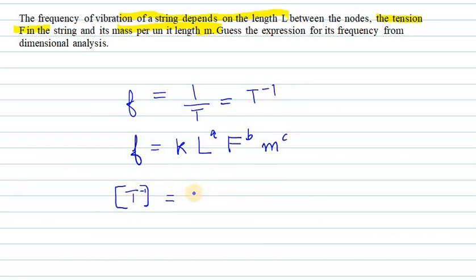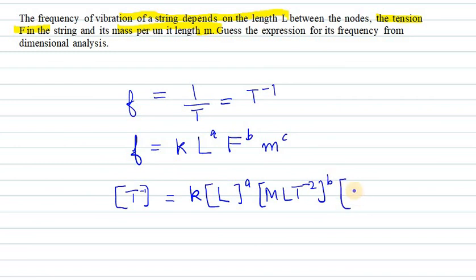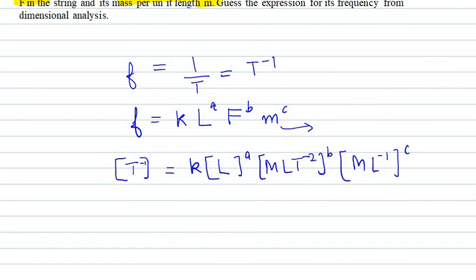The value for frequency is T raised to power minus 1 on the left-hand side, and K is a constant. The dimension for L is L raised to power A. The dimension for force is M L raised to power 1 T raised to power minus 2, all raised to power B. For C, mass per unit length gives M L raised to power minus 1, raised to power C. We have three constants A, B, and C to find, and T raised to power minus 1 with M to the 0 and L to the 0.